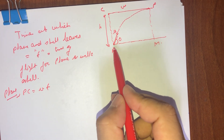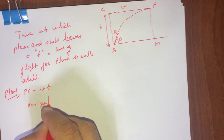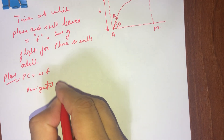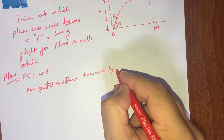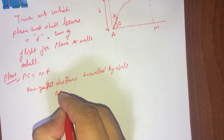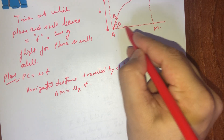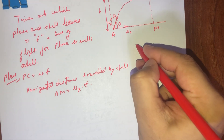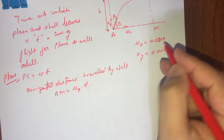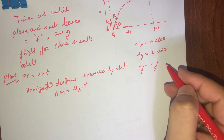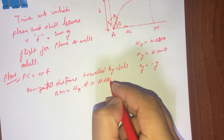The horizontal distance traveled by the projectile or shell is AM. So the horizontal distance traveled by the shell, AM, will be equal to the horizontal velocity ux multiplied by t. We can divide u into two components — horizontal and vertical. The horizontal component will be equal to u·cosθ, and the vertical component will be equal to u·sinθ. The acceleration due to gravity in the vertical direction will be equal to minus g. So we can substitute ux as u·cosθ, giving u·cosθ multiplied by t.